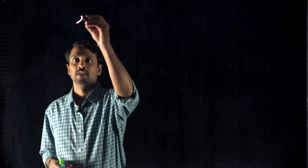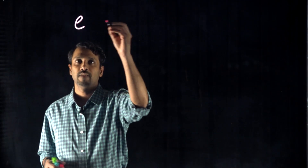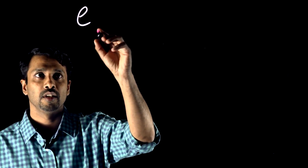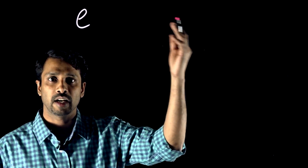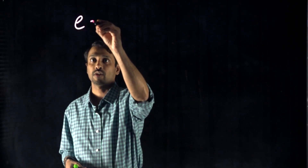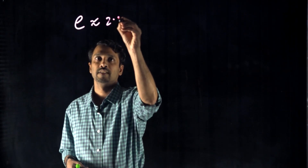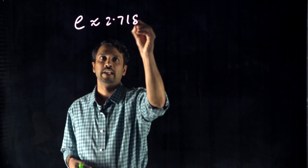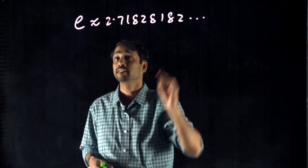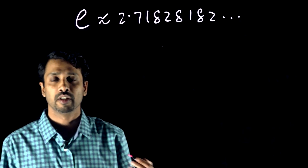So what are those constants? Let's talk about the first one: E. E is what we call an irrational number. Irrational number means you can never write it to the end. This is approximately 2.71828182 — it never ends. So it's called an irrational number.